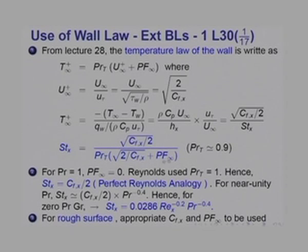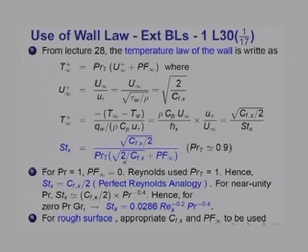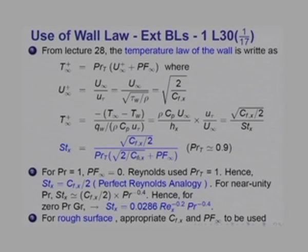For a rough surface, one must evaluate C_fx for a rough surface and also use P_f_infinity for a rough surface to obtain the Stanton number for that case. In all these evaluations, C_fx must be obtained from the methods of the previous lecture. Whatever the pressure gradient or v_w or other condition is present, you simply use that to evaluate C_fx and straight away compute St_x from it. This is the simplest way to evaluate Stanton number.